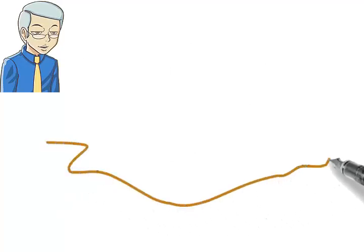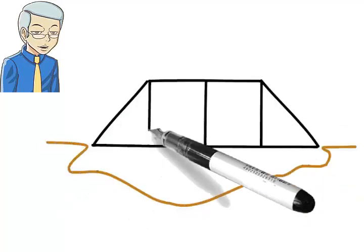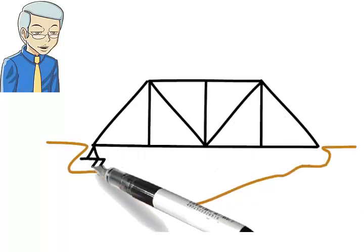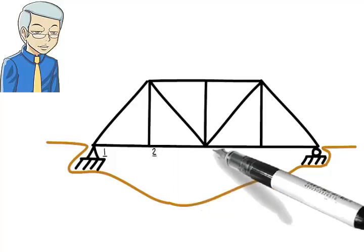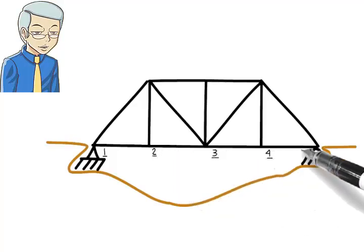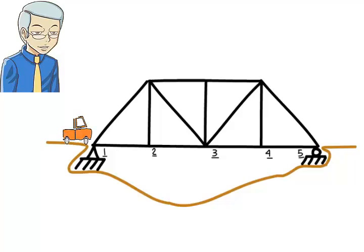Bridge structures are generally designed to withstand the load of moving vehicles where the load position changes as a vehicle moves across the bridge. Suppose we have a truss bridge consisting of five joints along its bottom cord. As a vehicle starts traveling on the bridge, the applied load position changes.